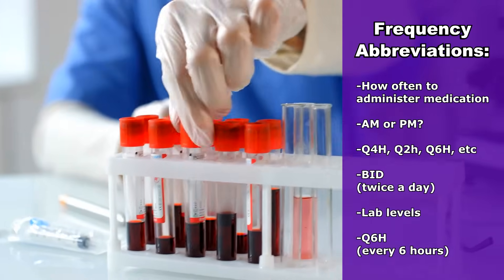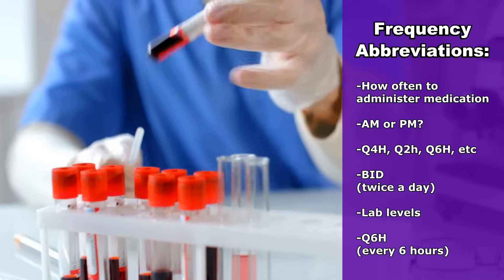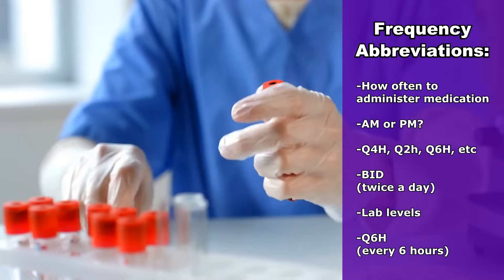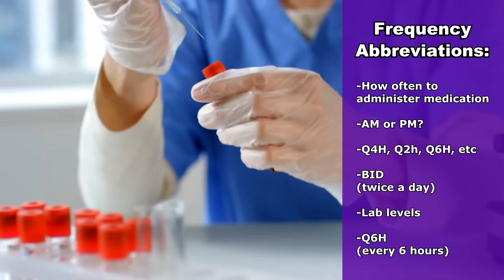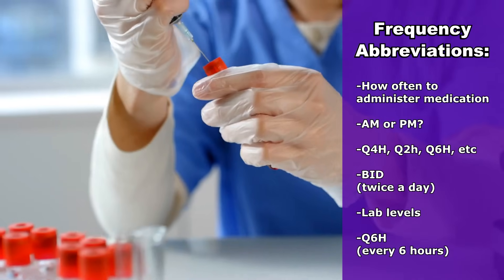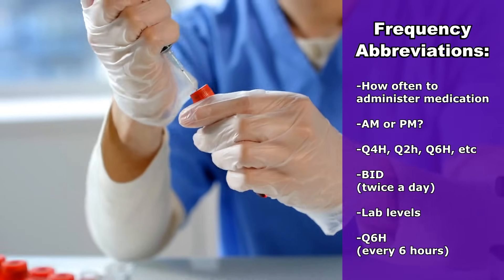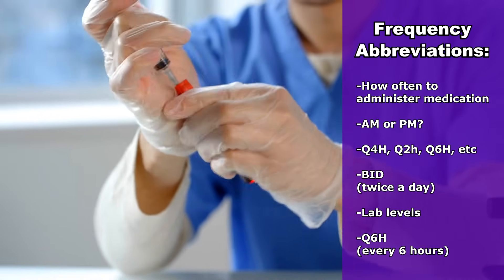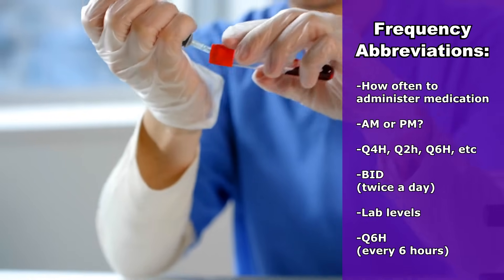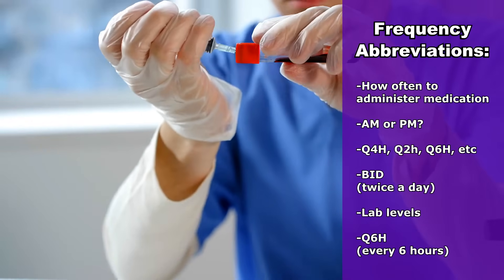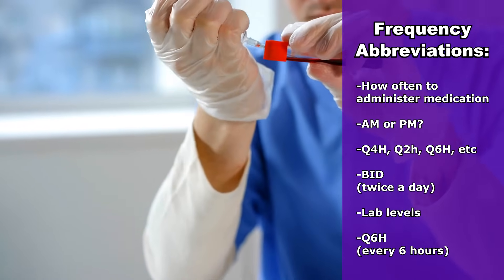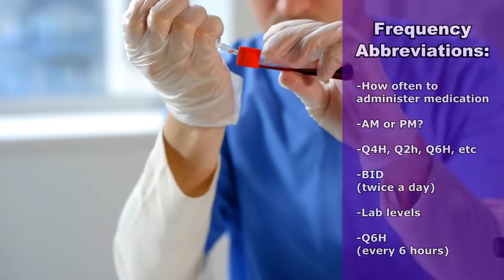Abbreviations can also be used when ordered by the physician to tell the nurse how often certain lab levels should be drawn. For example, troponin levels — the physician may order troponin levels Q6H, which means every six hours.